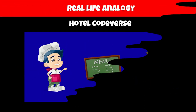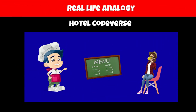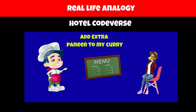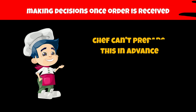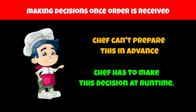Now consider that even though Hotel Codewars has a menu, some customers may want to customize their dishes, like adding extra paneer to the curry. The chef can't prepare this in advance — they have to figure it out as customers order. So the chef has to make a decision at run time. This is like run time binding in programming.